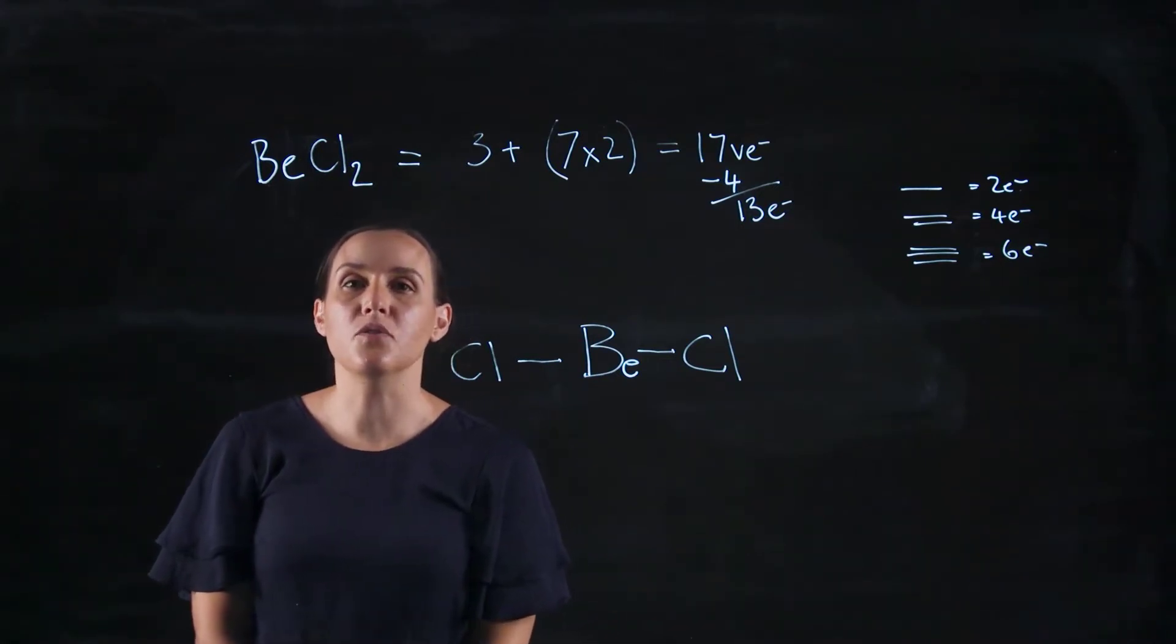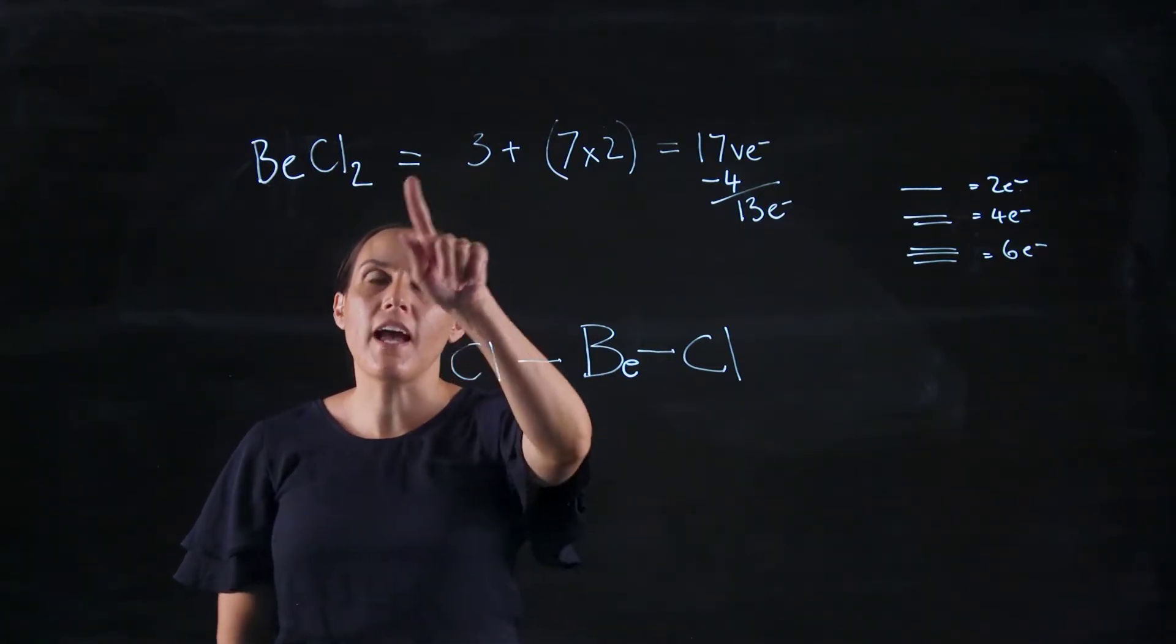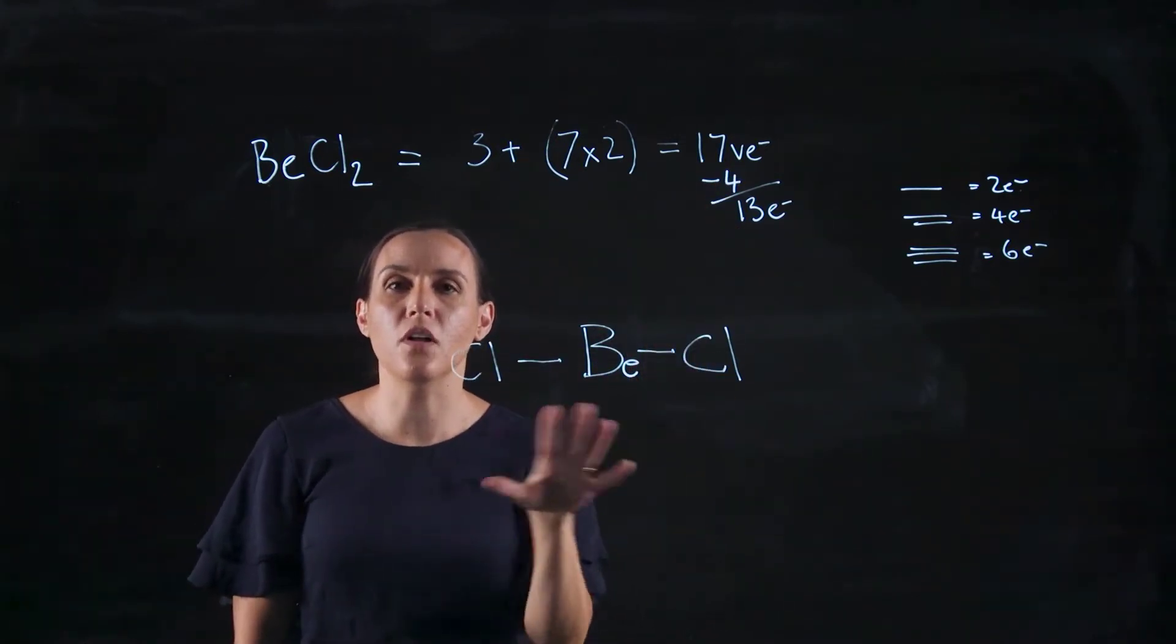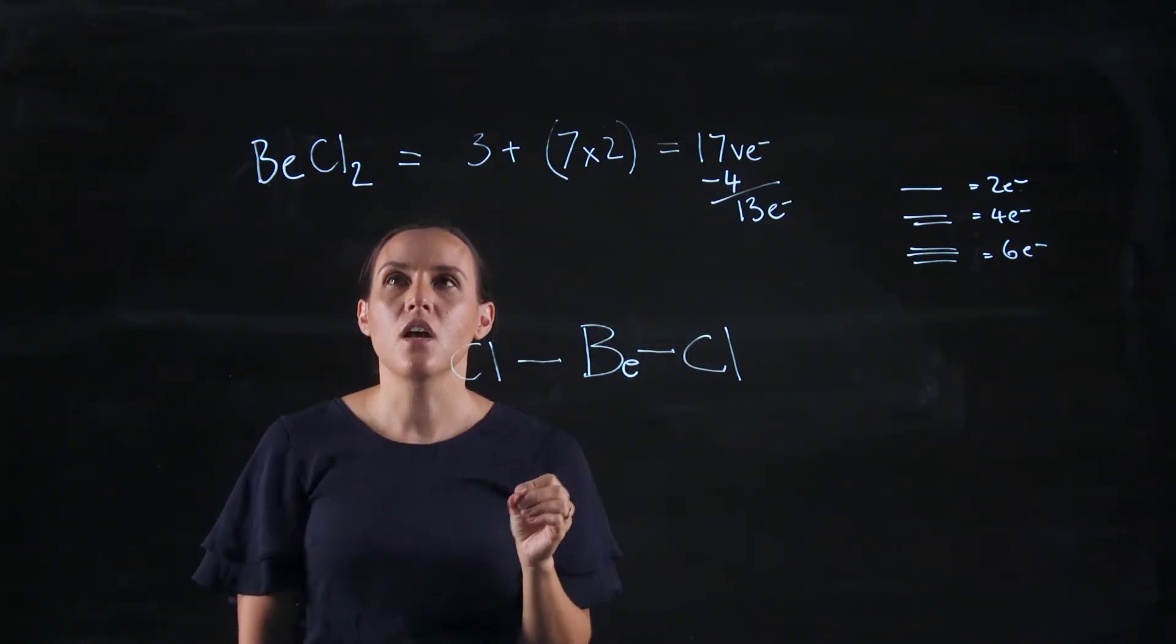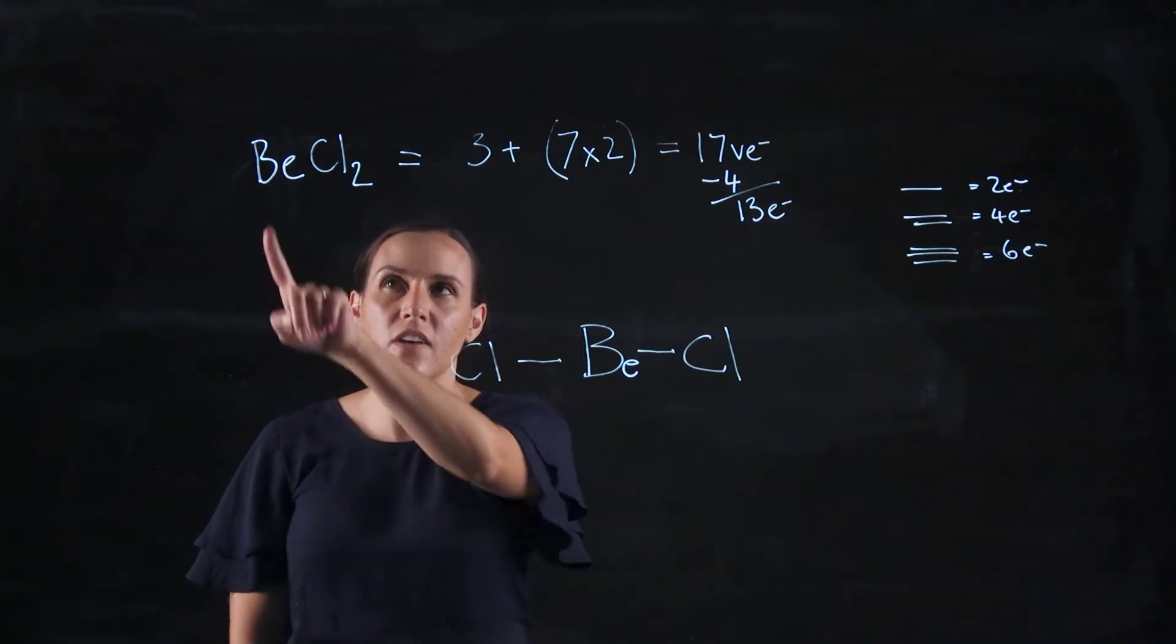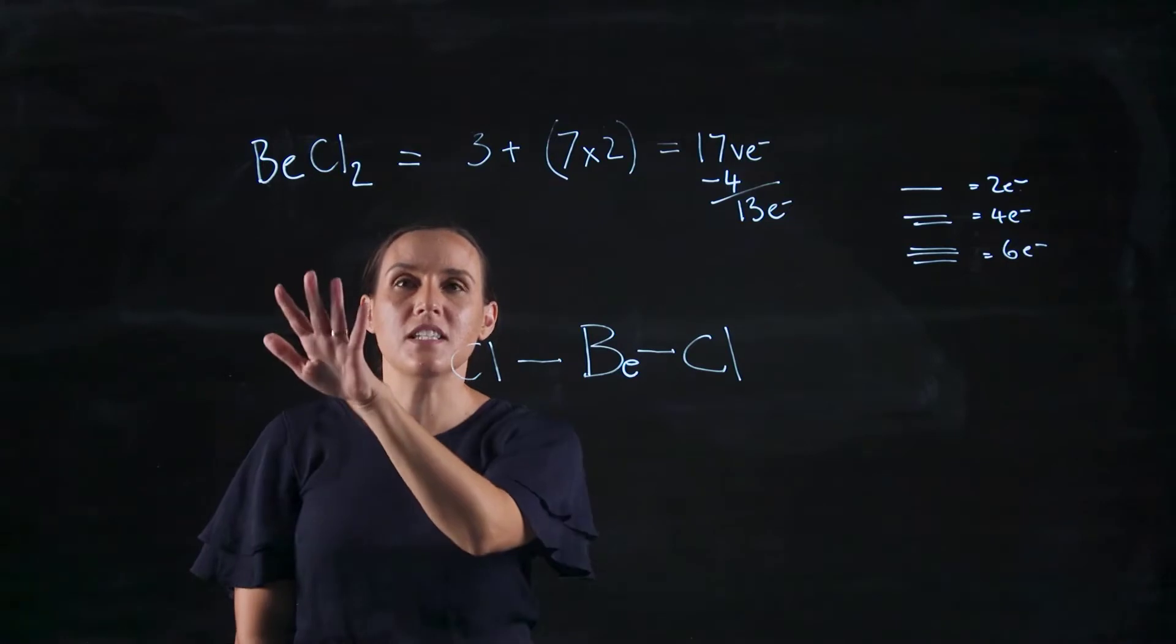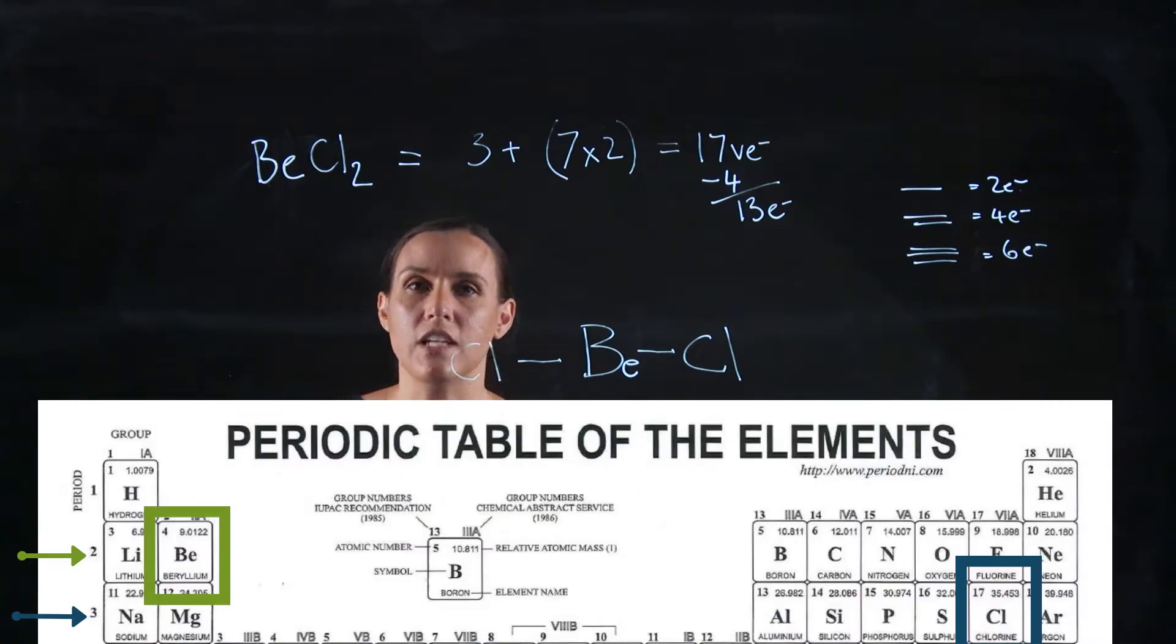So we've got BeCl2. To work out our valence electrons, how many we're going to be distributing over the whole molecule when these atoms come together, we look at the valence electron for each of these individual atoms and add them together. Now this one doesn't have a charge, so we don't need to think about adding any extras or taking extras away from the total value.